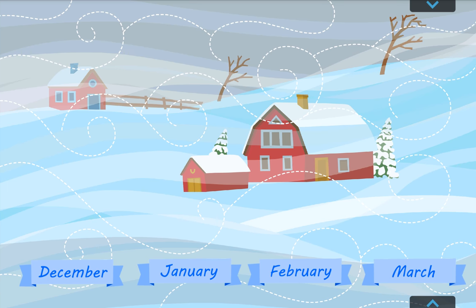The next winter months are February and March. In February there are sometimes blizzards and it often snows, sometimes for days. But in March the days are a little longer and the weather is a little warmer. Now you know the winter months: December, January, February and March.